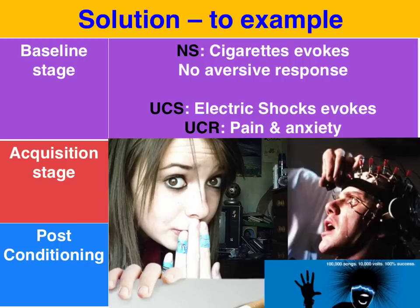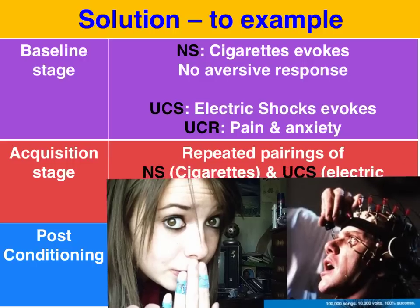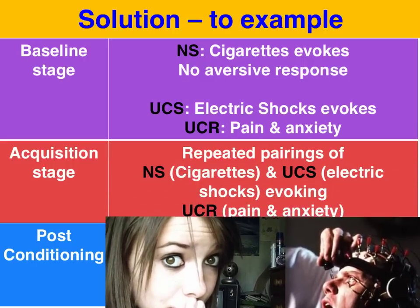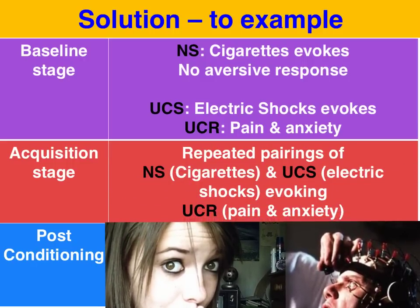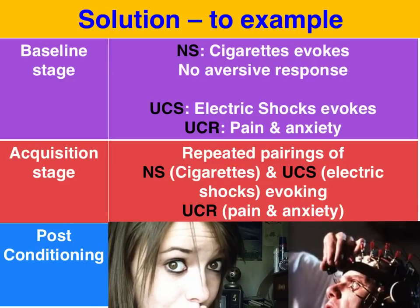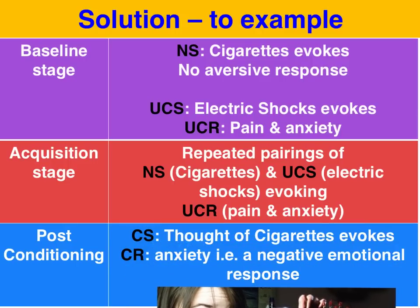No learning or conditioning is required for this relationship to occur. During the acquisition phase, we repeatedly pair the two previously unrelated stimuli — cigarettes and electric shocks — which reflexively evokes the unconditioned response of pain and anxiety. We know the aversion therapy has been successful when we can simply present the conditioned stimulus on its own — the thought or sight of a cigarette — which reflexively evokes a negative emotional response such as anxiety. Thus, an aversion has been created.